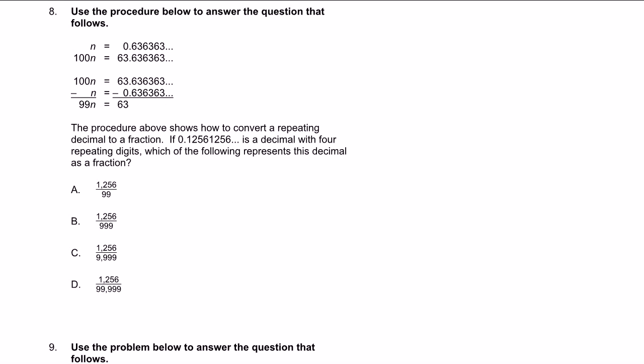Next problem. Let me go to the next problem. 8, use the procedure below to answer the question that follows. OK, n is equal to 0.63. OK, 100n is equal to 63. Just multiply it by 100. OK, they're trying to eliminate the repeating decimals. I get it. The procedure above shows how to convert a repeating decimal to a fraction.